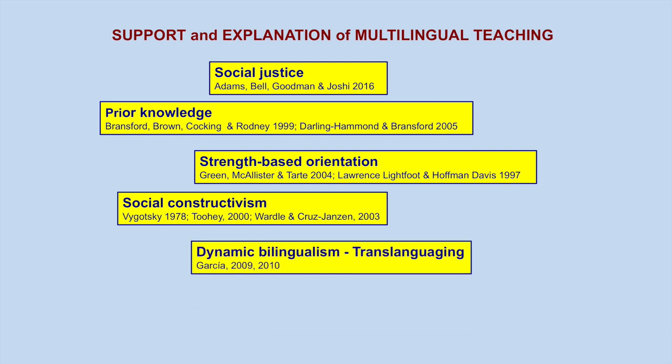Dynamic bilingualism is a new way of looking at bilinguals. This theory describes the two languages of a bilingual as fluid, dynamic, and interconnected. It focuses on language use, rather than on skills bilinguals have in their two languages. Translanguaging is a term that describes how bilinguals naturally and spontaneously use their two languages — their entire language repertoire — to manage the communicative needs they encounter. With this in mind, multilingual teachers open their classroom doors to all languages.